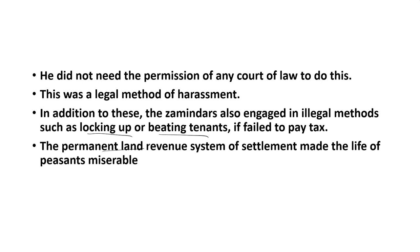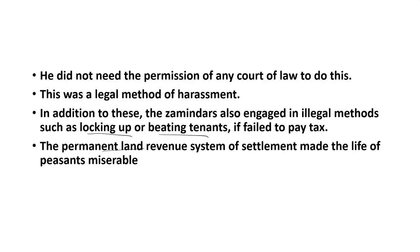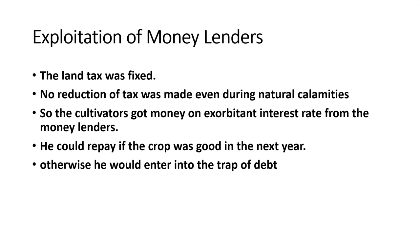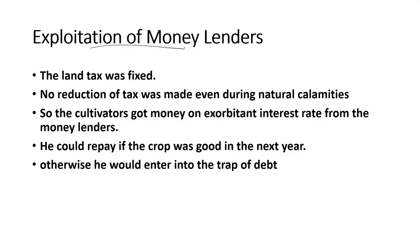Thus, the Permanent Land Revenue System of Settlement made the life of the peasants miserable. The peasants lost ownership of land, were required to pay high taxes, and if the land tax was not paid, their property would be taken away by the Zamindar. In addition to exploitation by the British through high land revenue, and by the Zamindars through various methods, these peasants were also exploited by another group — the moneylenders.